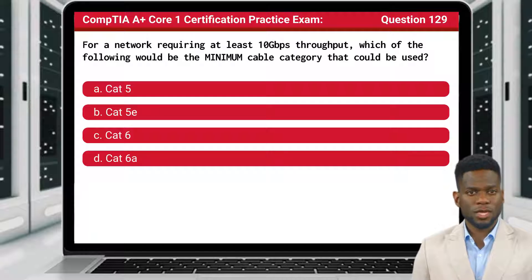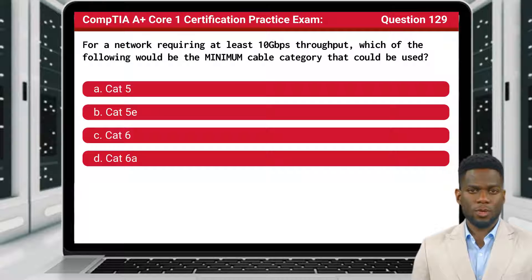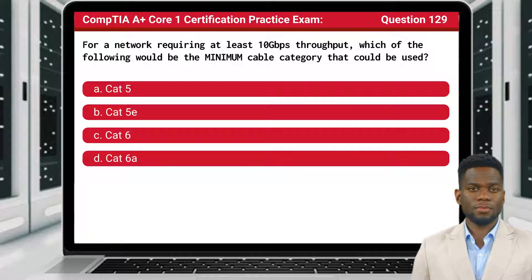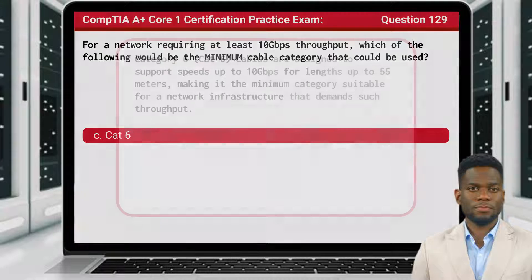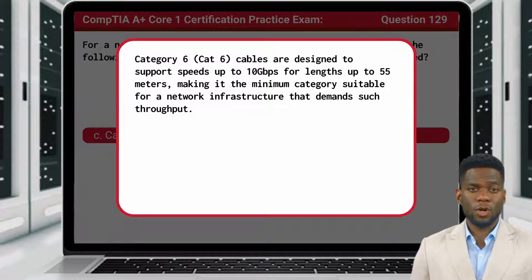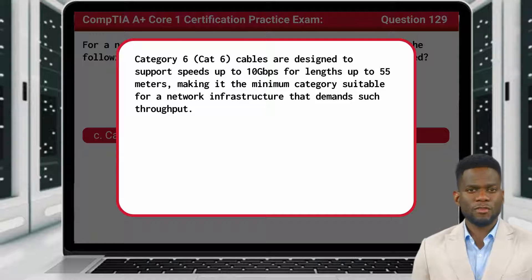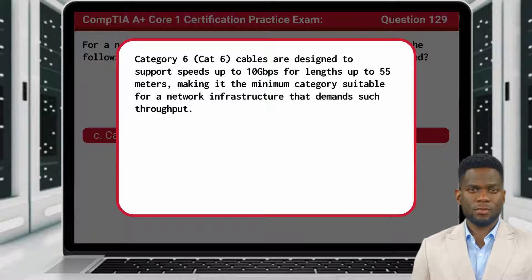Question 129: For a network requiring at least 10 Gbps throughput, which of the following would be the minimum cable category that could be used? The answer is C — CAT 6. Category 6 cables are designed to support speeds up to 10 Gbps for lengths up to 55 meters, making it the minimum category suitable for a network infrastructure that demands such throughput.